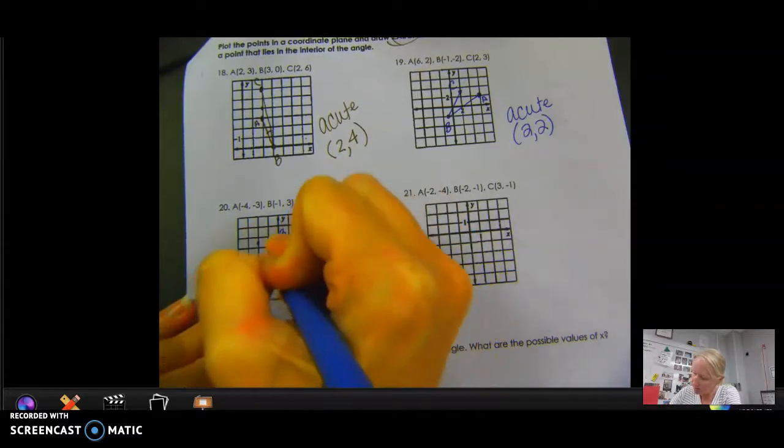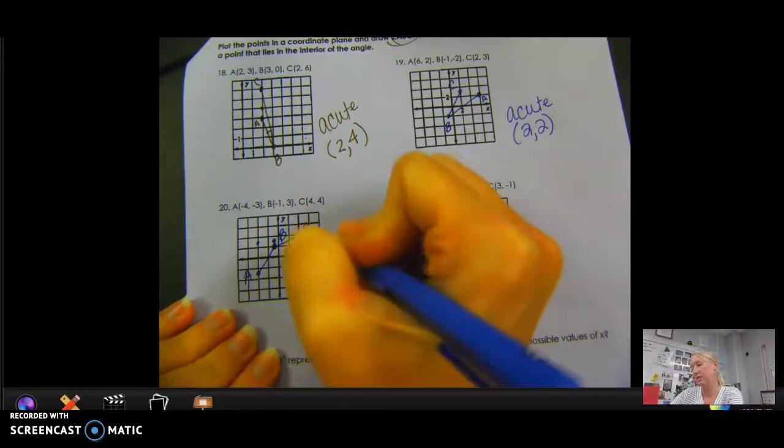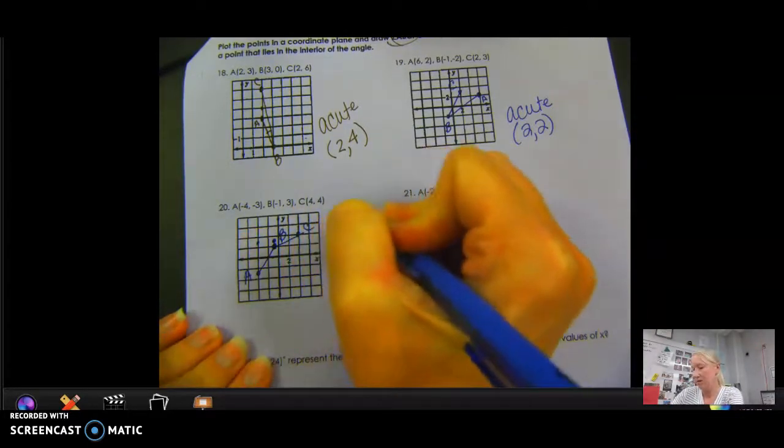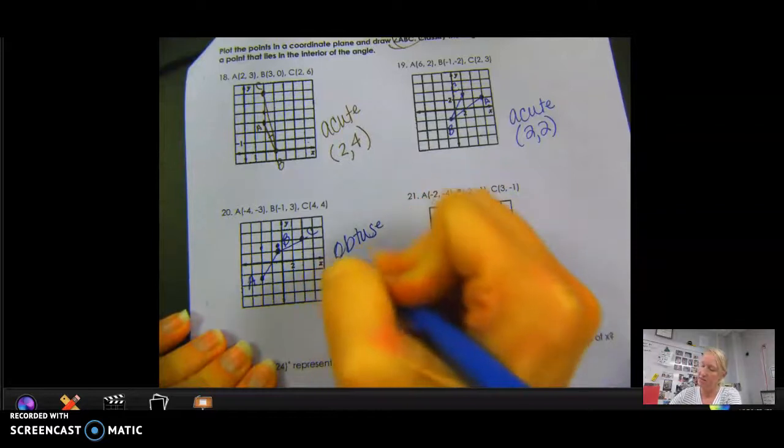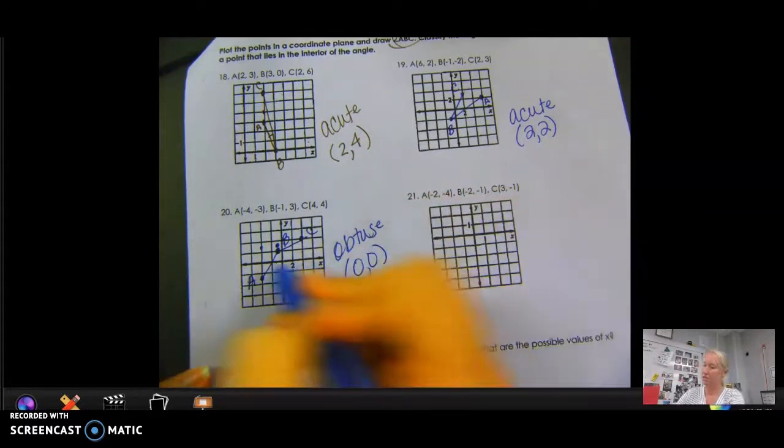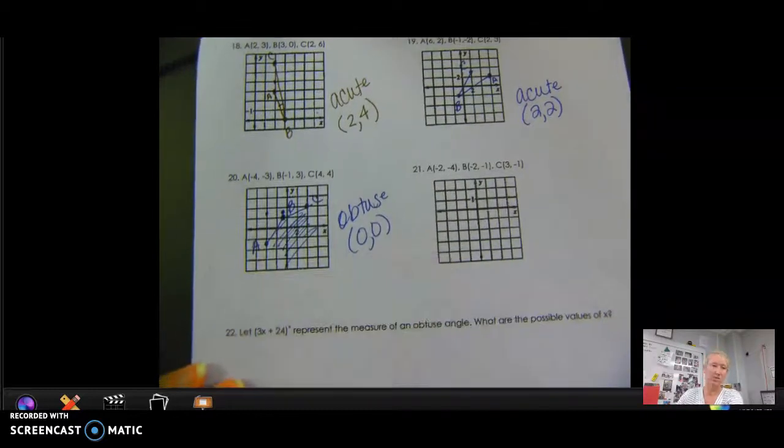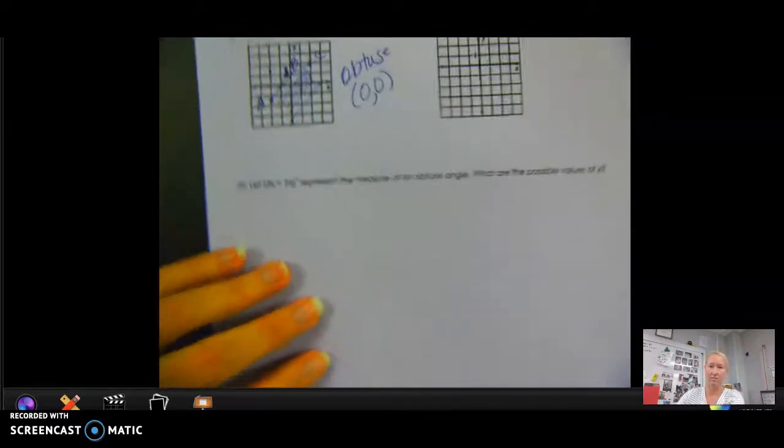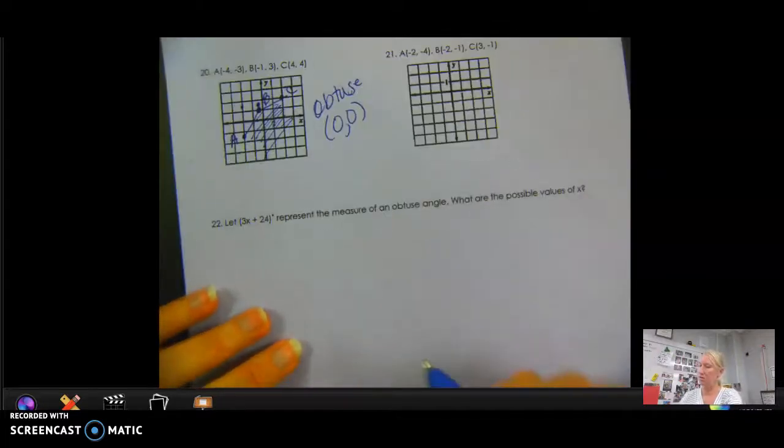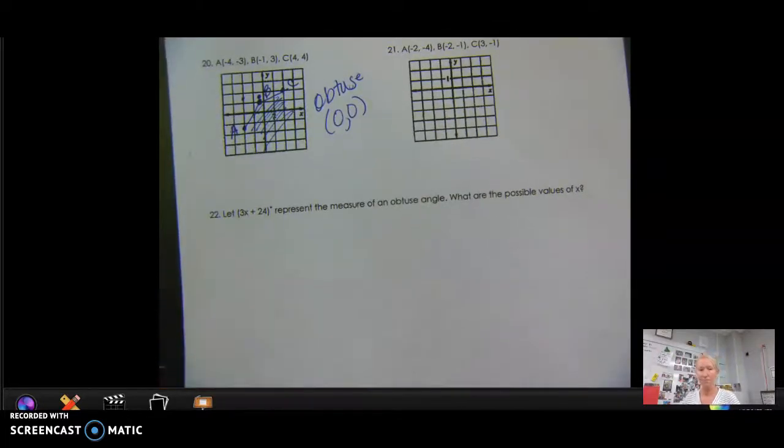So A to B to C. Now this is an obtuse angle. And it looks like 0, 0 is inside that angle. So essentially anything in this area is inside that angle. We're going to skip doing this because it's just the same. And I think you guys can plot those points and then decide whether they're acute or obtuse. All right. Last one.